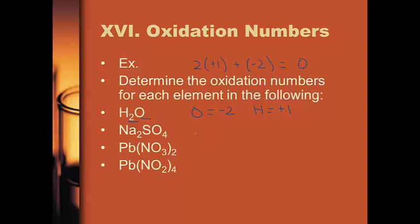Na₂SO₄: what are the charges on Na, S, and O? Oxygen is −2 from the rules. Sodium is in column 1 and is combined with other elements, so it is +1. To find sulfur, set up the equation: 2(+1) + S + 4(−2) = 0. That gives 2 + S − 8 = 0, so sulfur must have a charge of +6.